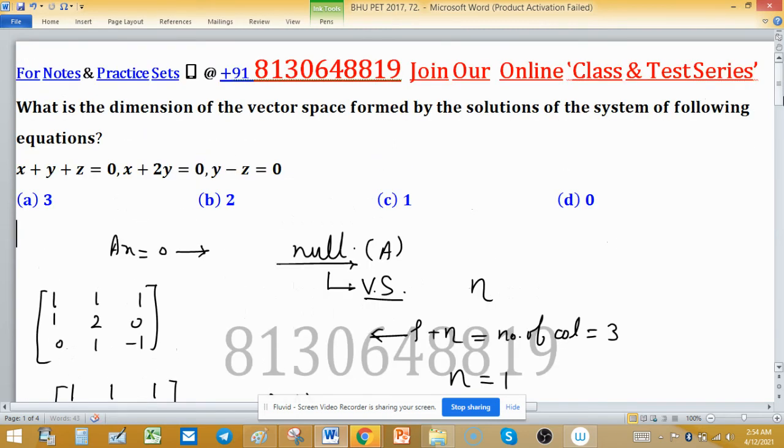Asked about nullity - what is nullity? Nullity is the number of free variables. As we can see, rank is 2 means that there are two pivot elements.